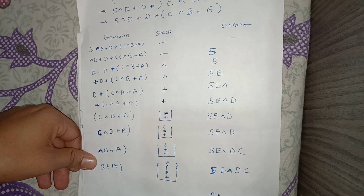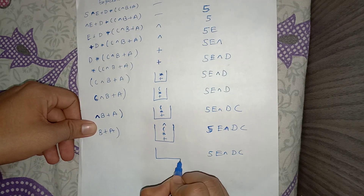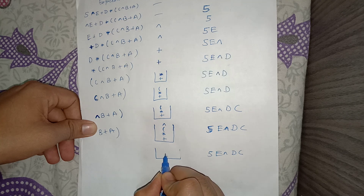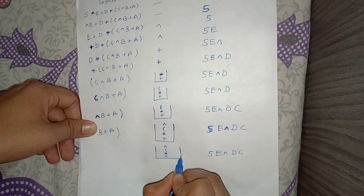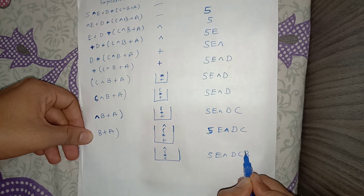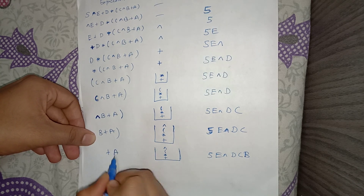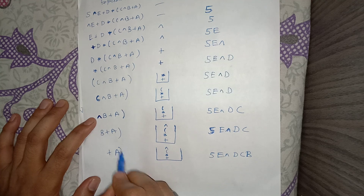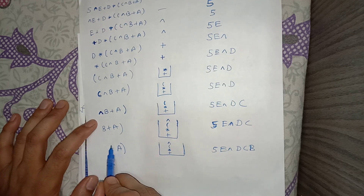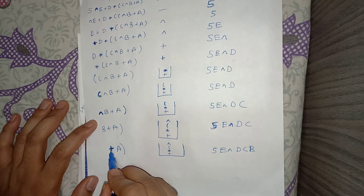The next token is B, an operand, so it goes directly to the output: 5, E, XOR, D, C, B. The next token is XOR. Then the next token is plus, and we want to push it onto the stack, so we check precedence.